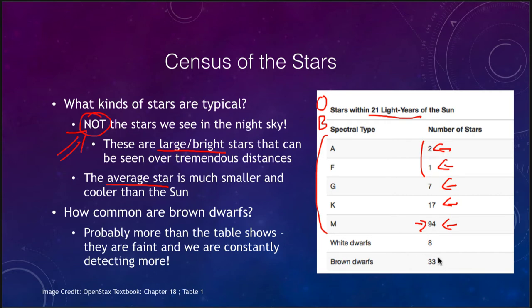We also see white dwarf stars and brown dwarf stars. These could be underestimated. These are very hard to find, even 21 light years away. The brown dwarfs are very faint and we are still detecting more. Likely the number of brown dwarfs actually exceeds the number of M type stars. There would actually be more brown dwarfs within 21 light years than there are cool red dwarf stars.